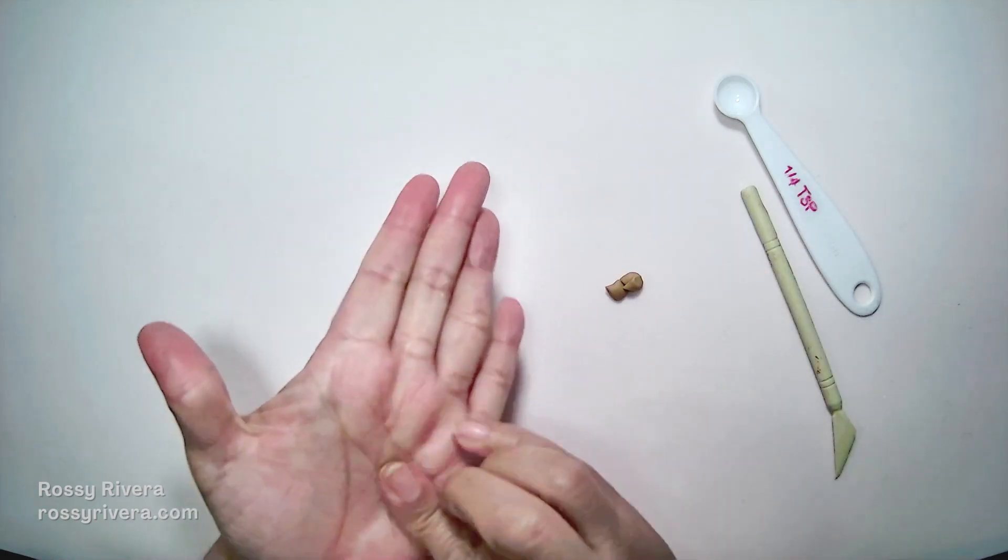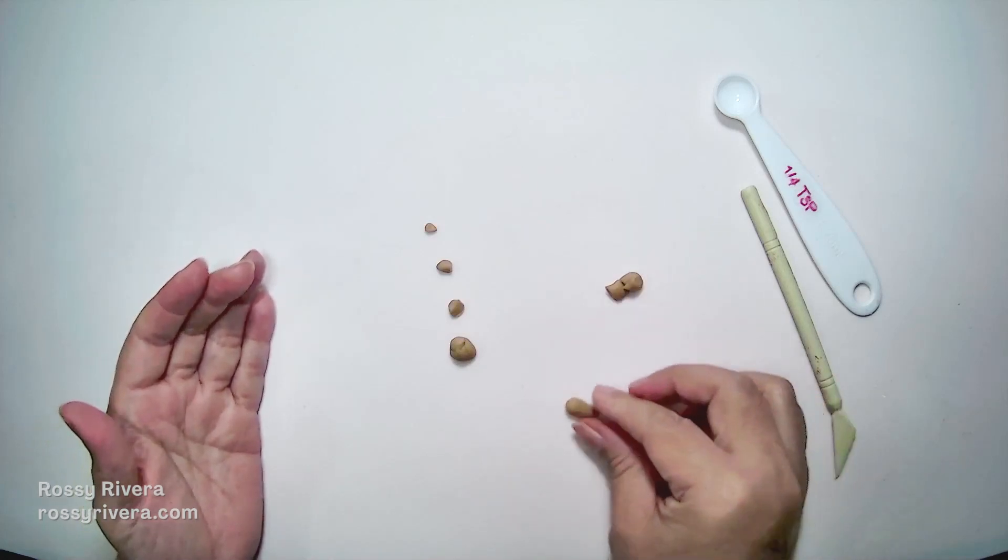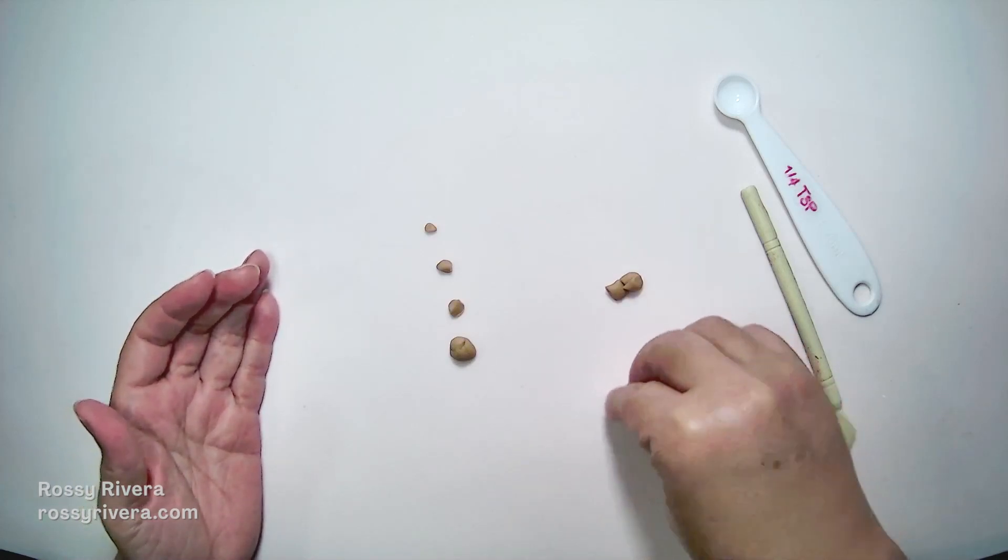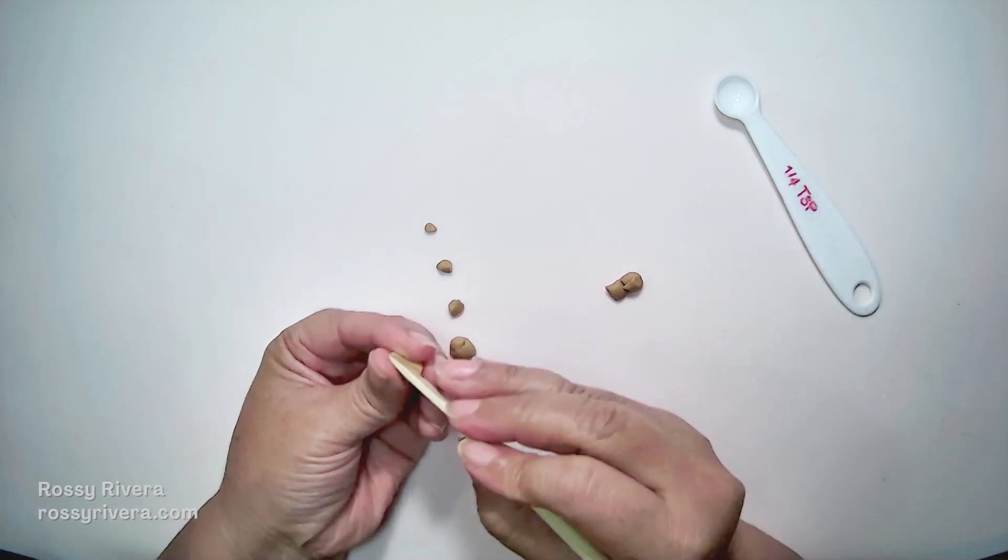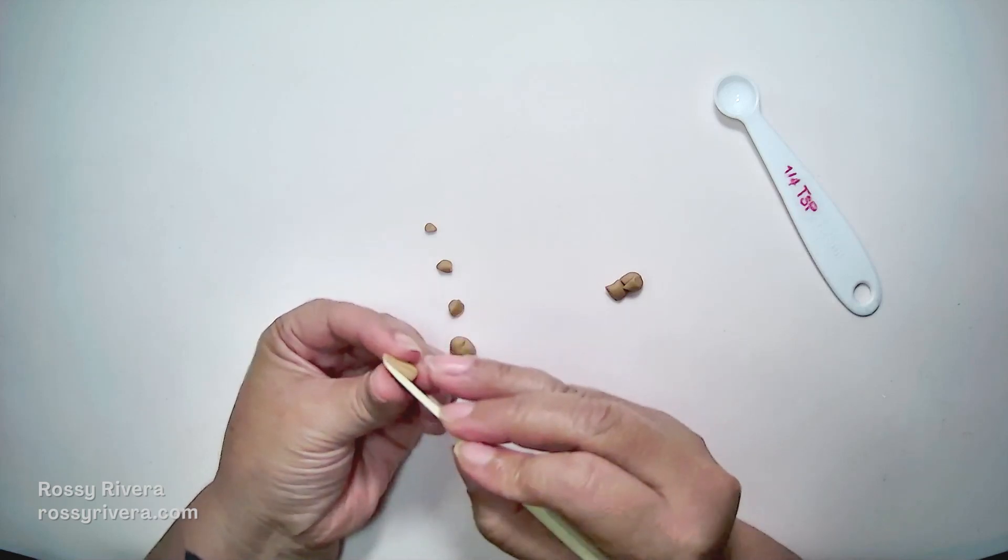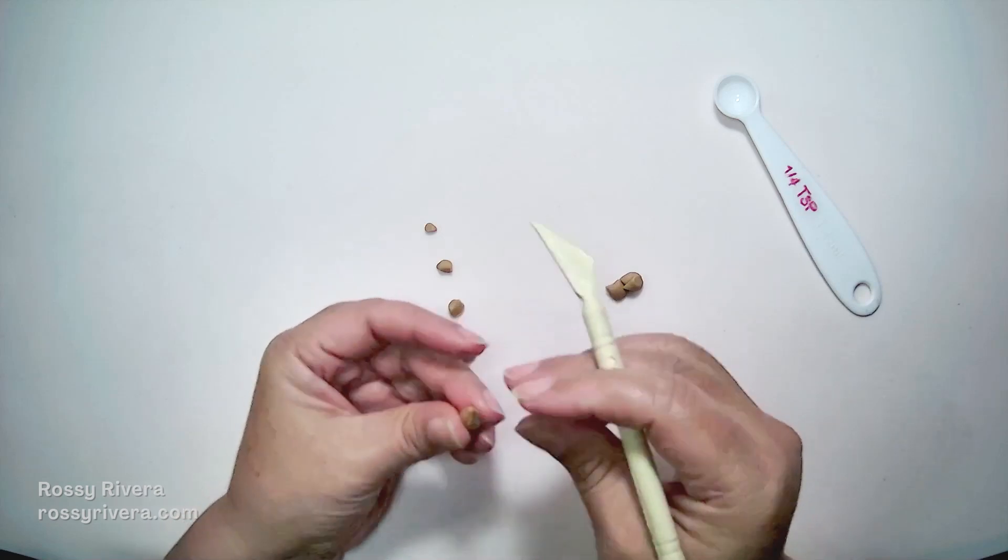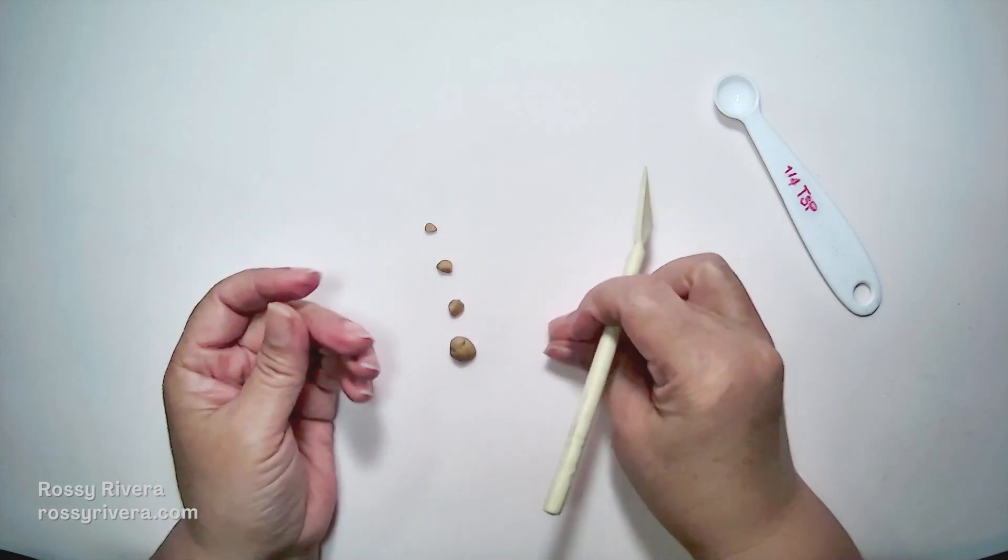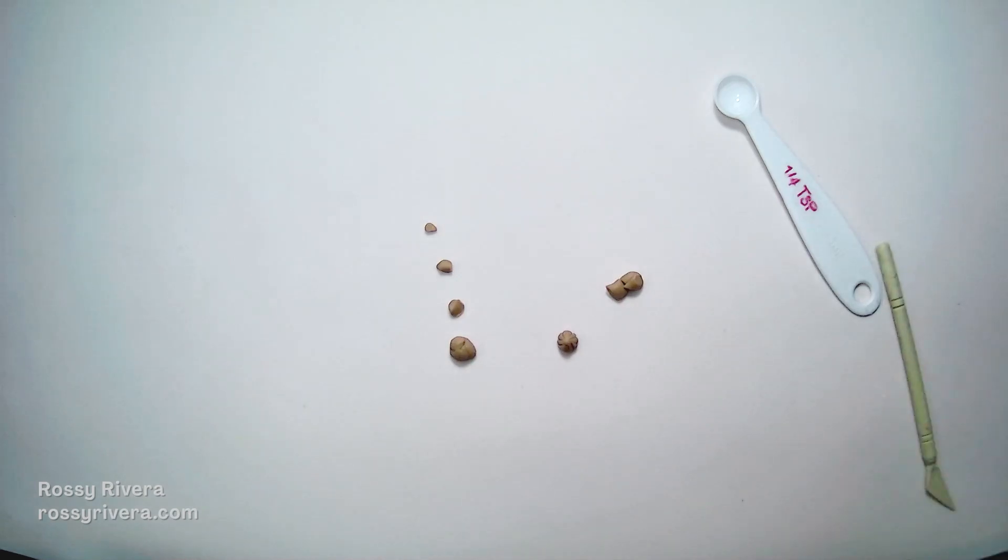And then everything that we have remaining on the side here, we're going to just mix it together. And then we're going to start working on the base. So I start by making a ball, forming that into a drum and then make it flat. So it looks more like a cone. And then we're going to start going all around with vertical lines all around, just to give it some texture.